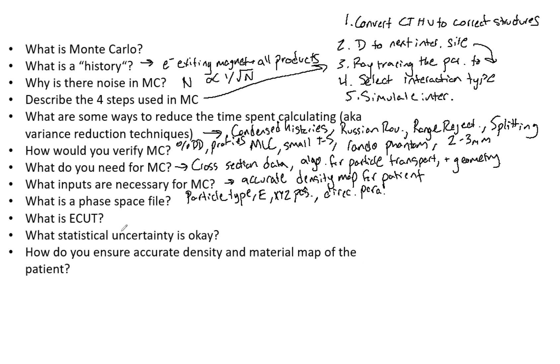What statistical uncertainty is okay? We have a task group TG-105—read that, memorize that. It says two percent. Nice and easy.